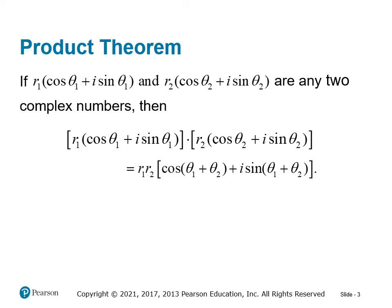It's very important that you understand this formula and have it in your notes. The Product Theorem says if r1 (cos θ1 + i sin θ1) and r2 (cos θ2 + i sin θ2) are any two complex numbers, then the product of those numbers is r1 cis θ1 times r2 cis θ2.